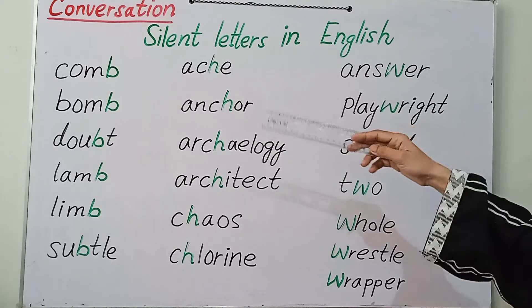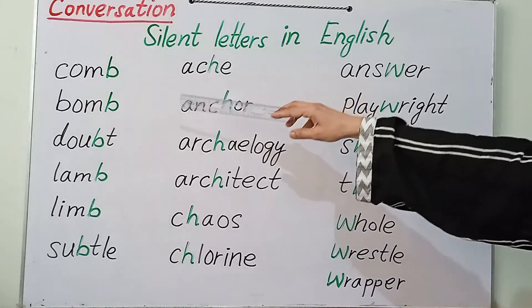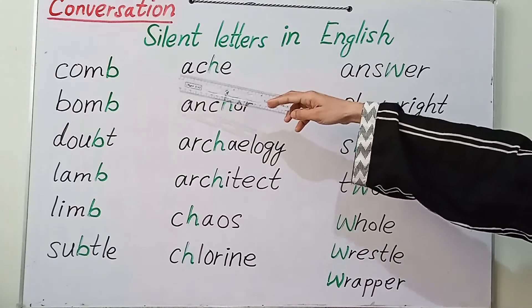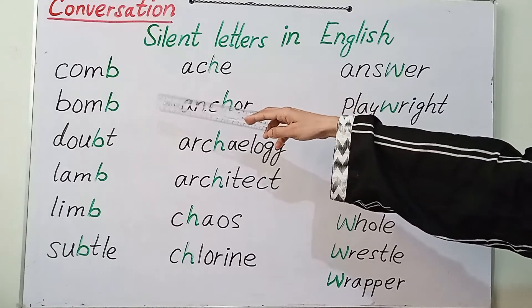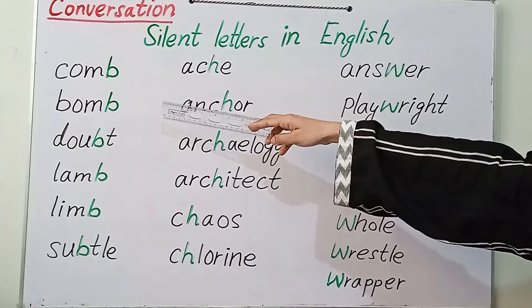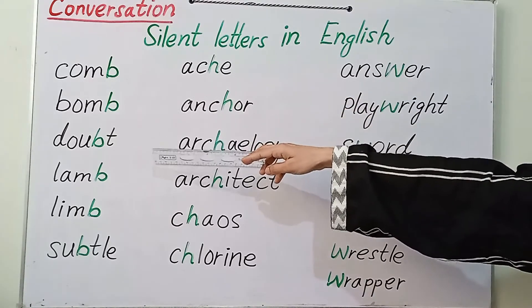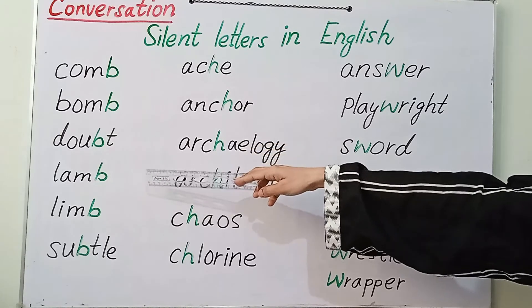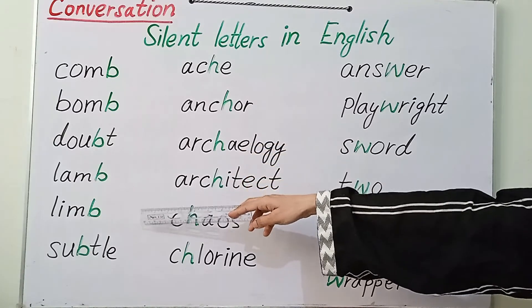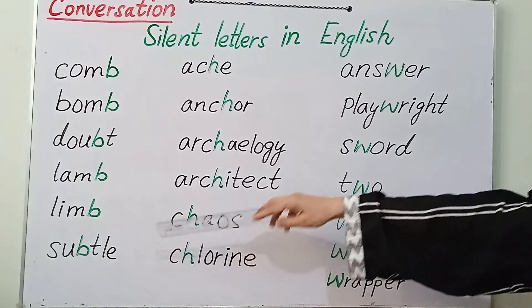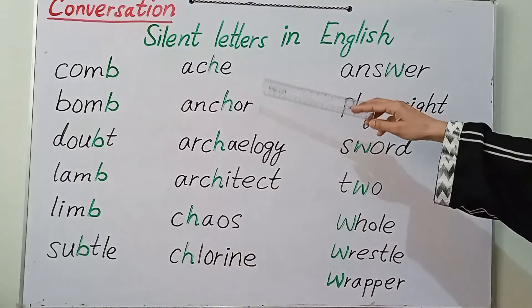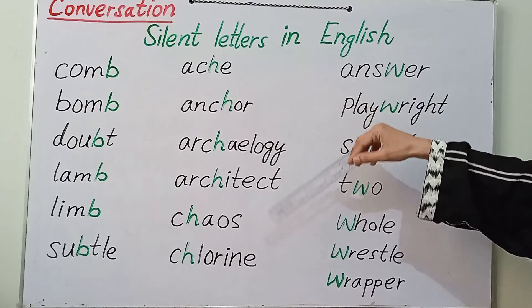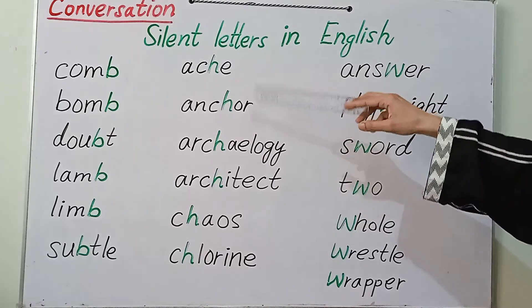Here is the first word: comb — B is silent. Bomb — B is silent in this word. Doubt — B is silent. Lamb, lamb, subtle. These are all words where the letter B is silent.